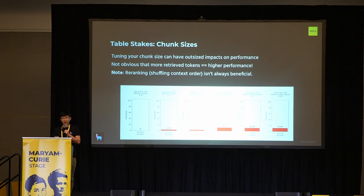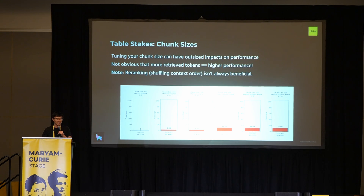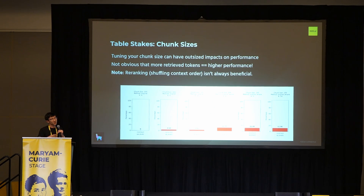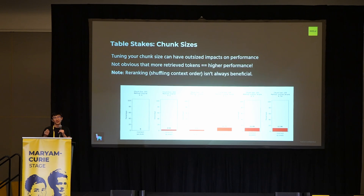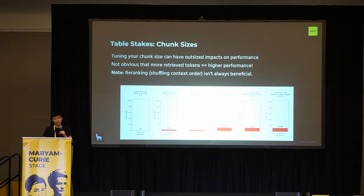Another note is re-ranking. If you do re-ranking on its own, this is typically useful for retrieval-based problems. But re-ranking in this context really just means you're reshuffling the order of the context that you're presenting to the LLM. That doesn't always lead to better performance — in the end, you retrieve all the stuff and stuff it in the prompt window anyway, and the LLM isn't always guaranteed to give you better results. It might actually give you worse results just because you shuffled the order of the context.